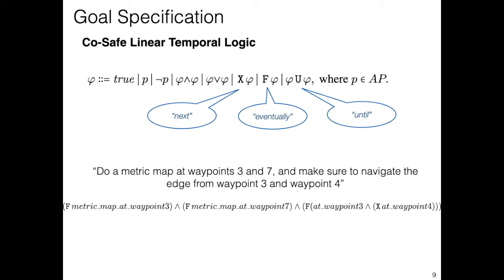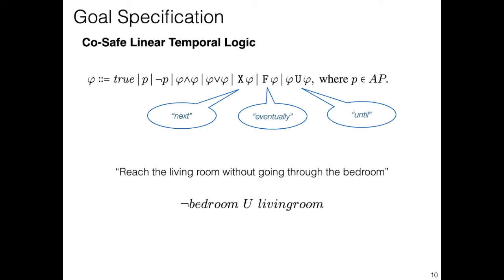In this example, the task of moving between waypoints 3 and 4 might be an observational task triggered by the component responsible for building the spatiotemporal edge models. The final example is asking the robot to go to the living room whilst avoiding the bedroom. This can be easily expressed in Cosafe LTL as not bedroom until living room.